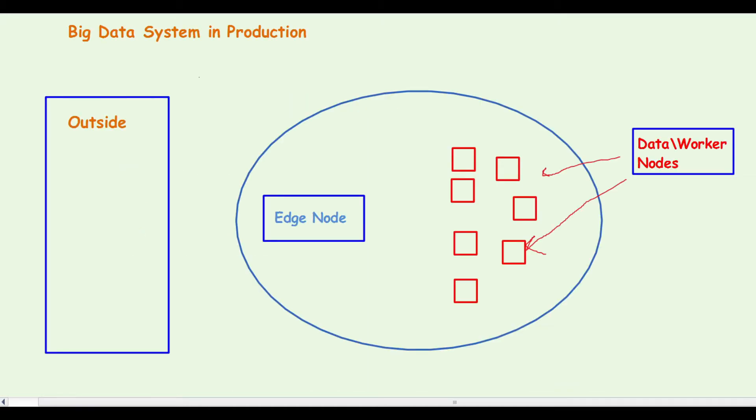Before we proceed, let's try to understand a big data ecosystem in production. In a typical big data ecosystem, you have something called edge nodes. The edge node is basically the gateway to the big data or Hadoop cluster, so any job that you submit gets submitted on the edge node.